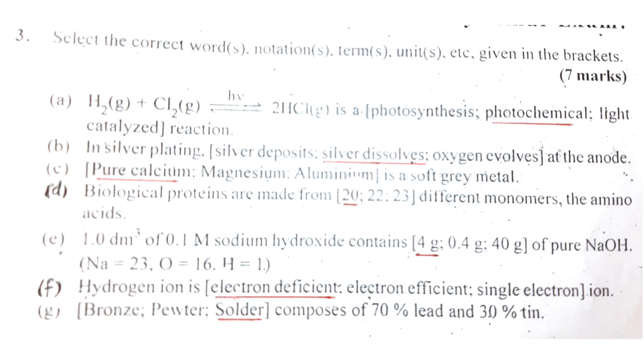In silver plating, silver is deposited at the cathode, silver dissolves at the anode, and oxygen is evolved.